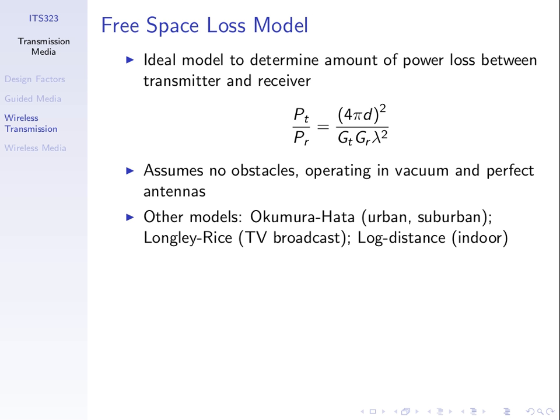Friis came up with an equation for how much power we lose versus distance in a perfect environment. That is used in the free space path loss model — a mathematical model for working out how much power we lose. It's the simplest model, assuming we're working in free space with no atmospheric effects and no other obstacles.